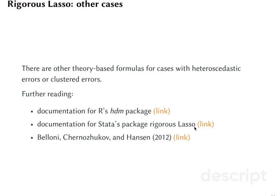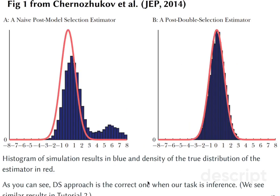If you are interested, you can always read more from the theoretical papers. Finally, they show in the paper something that resembles what we did in the tutorial. They show us and try to convince us using simulations that a naive post model selection estimator looks incorrect with respect to what it should look like, while the post double selection estimator has the correct distribution of estimates.